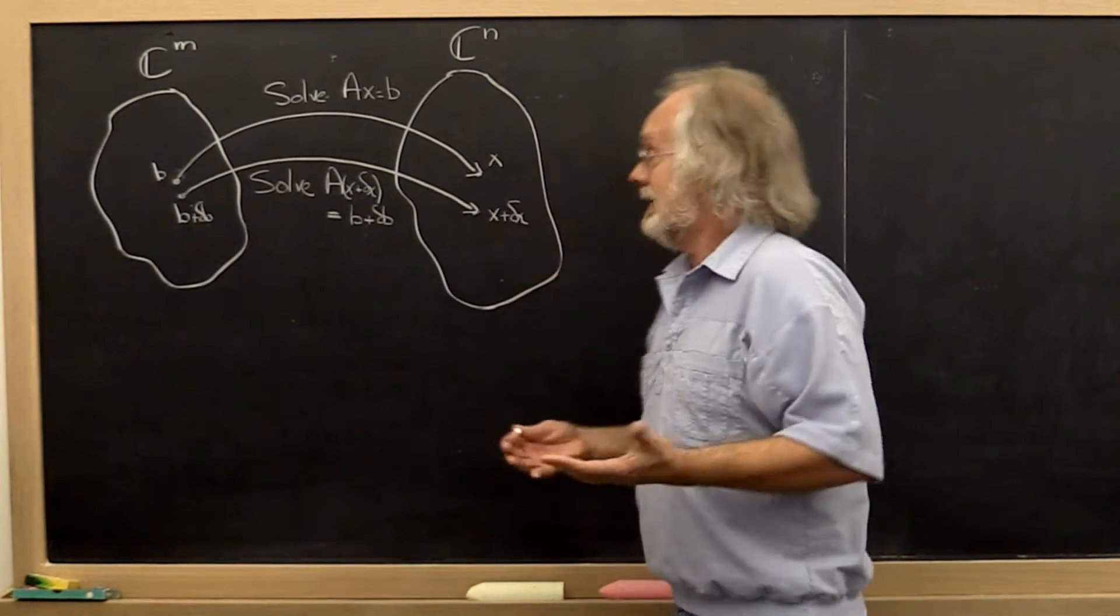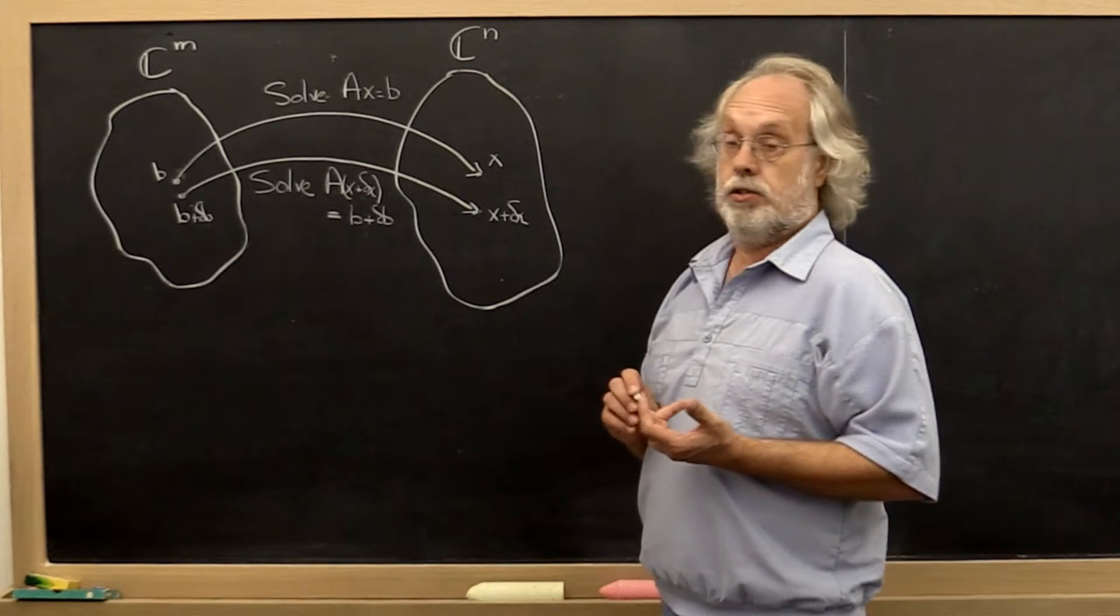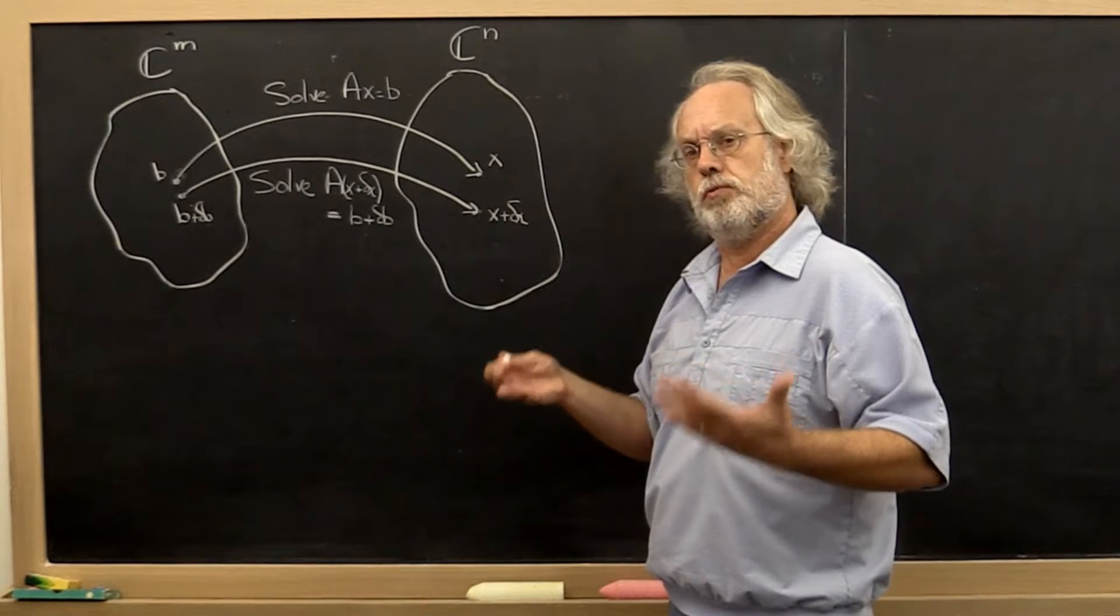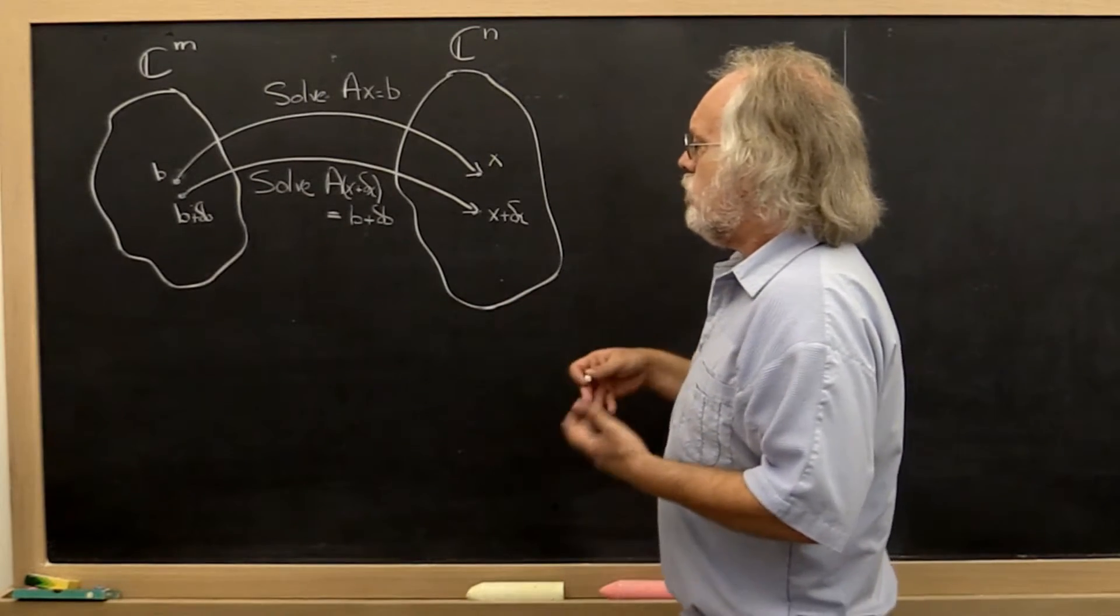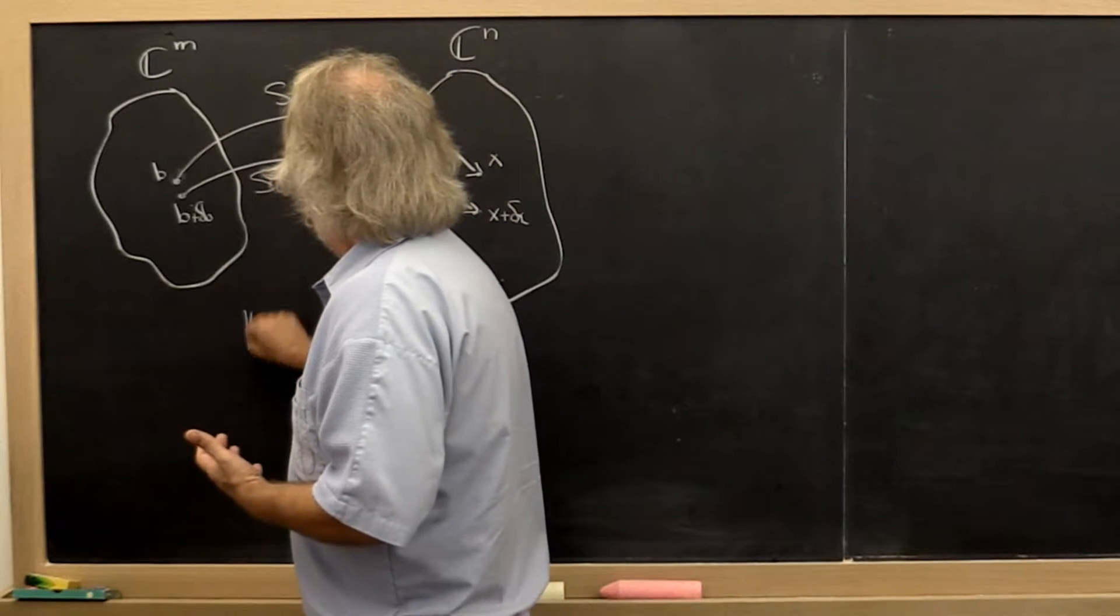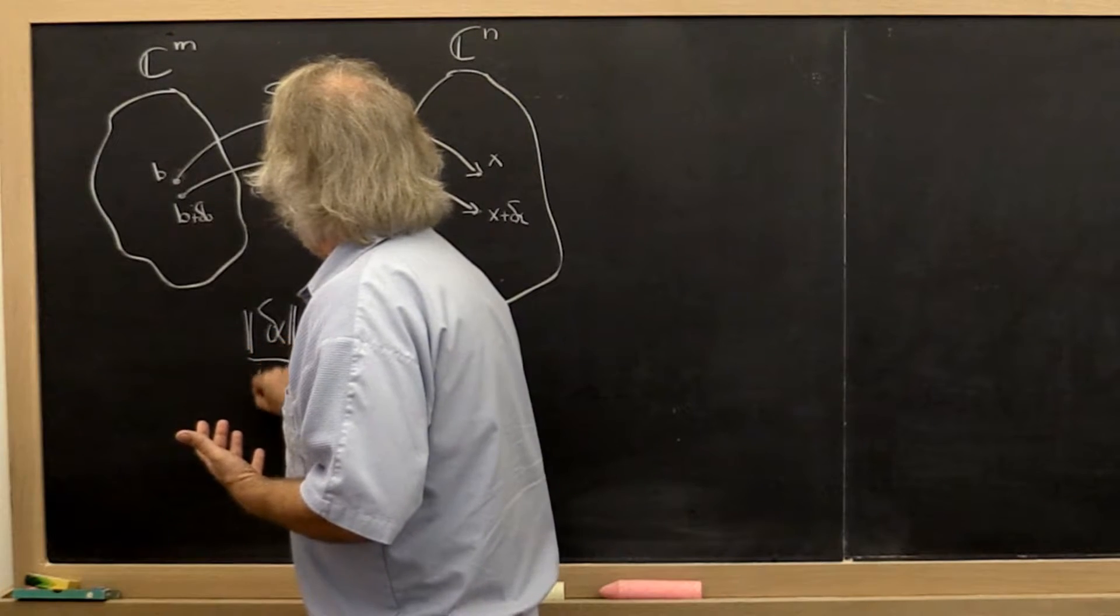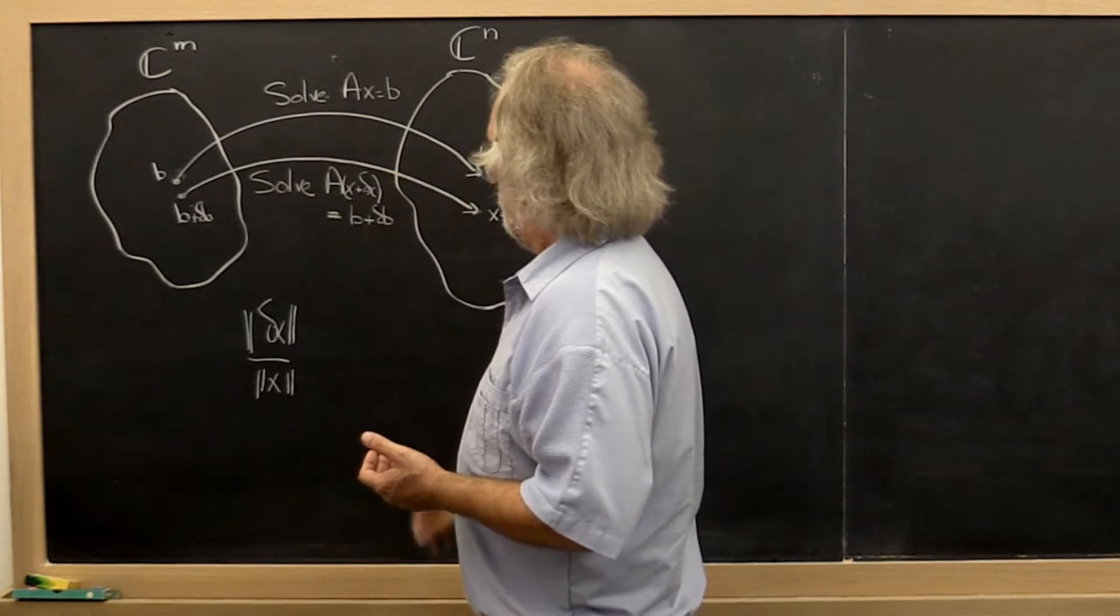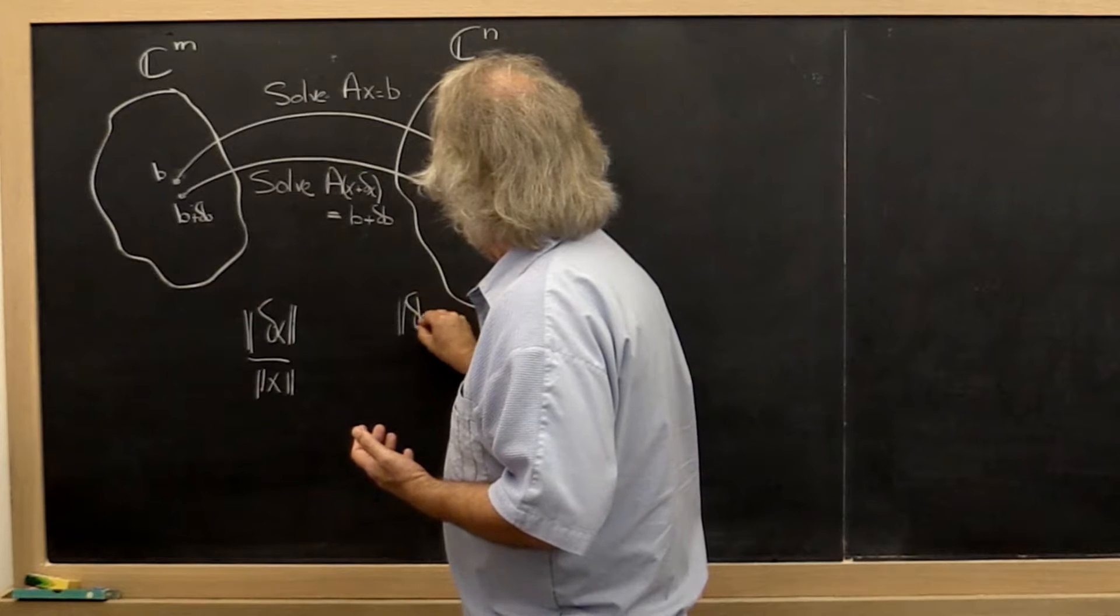A small error would occur. Obviously, what you would like is for there to be a small error in the solution as well. How do we measure small? We use vector norms. But really we are interested in relative error. We're interested in the change in x relative to x that results when you do these two computations, and you want to compare that to the relative error in B.